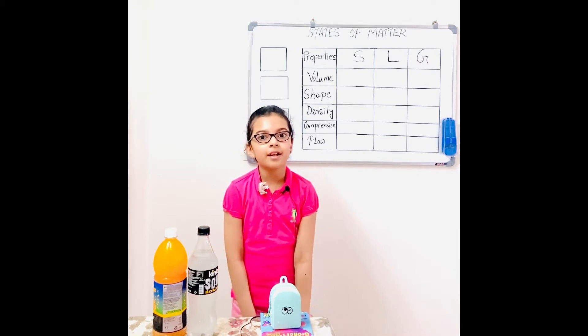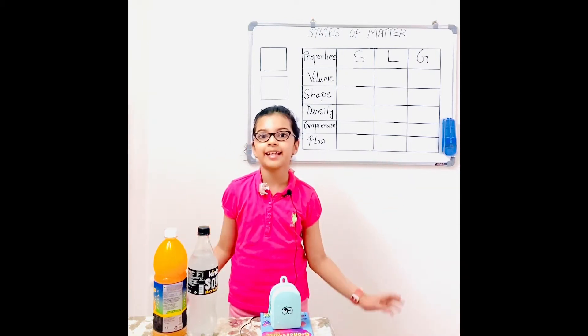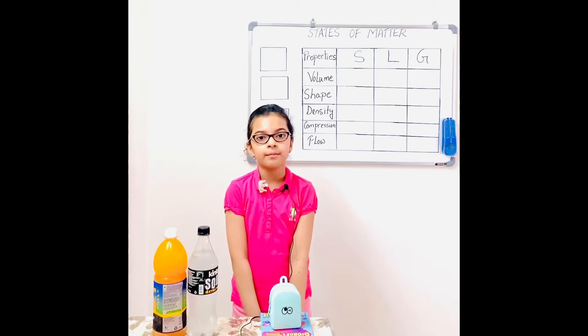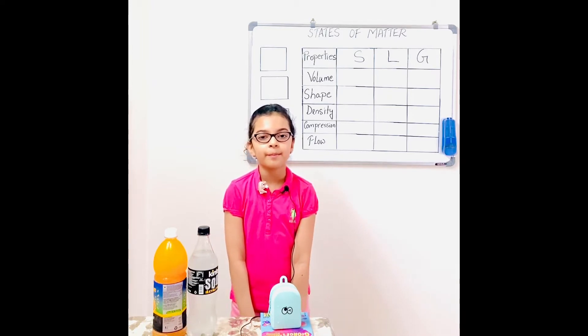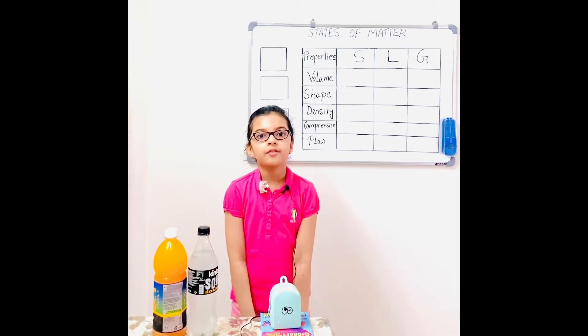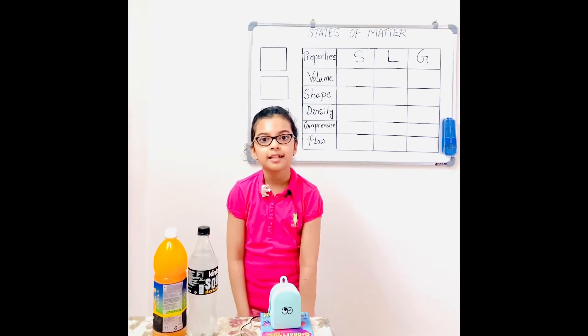If not, matter is everything that has mass or volume. Mass is the amount of matter in an object and volume is the amount of space taken up by the object.